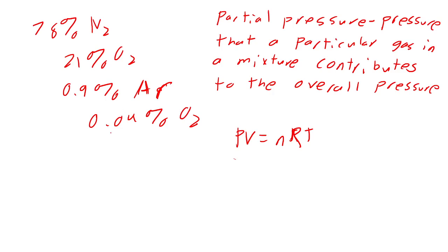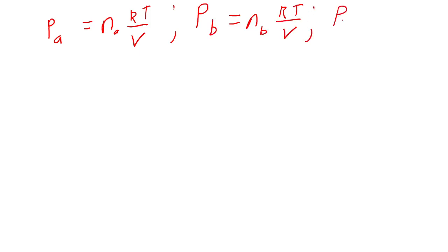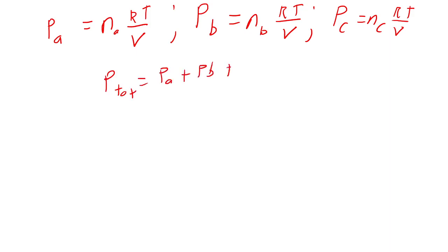We have an equation where we can calculate the pressure of each gas. The pressure of gas A equals the moles of A times RT over V. Similarly, pressure of B equals n_B times RT over V, and pressure of C equals n_C times RT over V. We can calculate each compound's pressure independently, then add all those pressures together to get the total pressure. This matches P_total = n_total × RT/V.